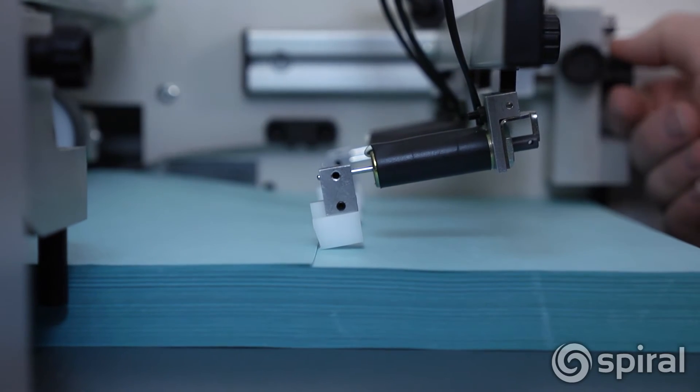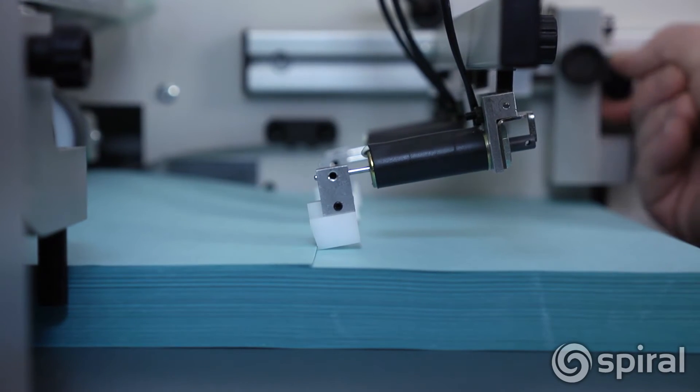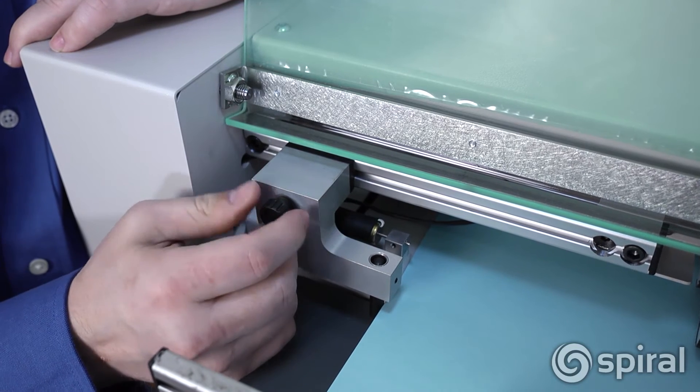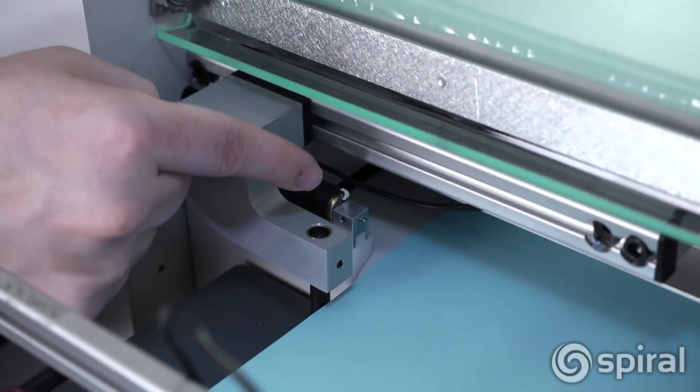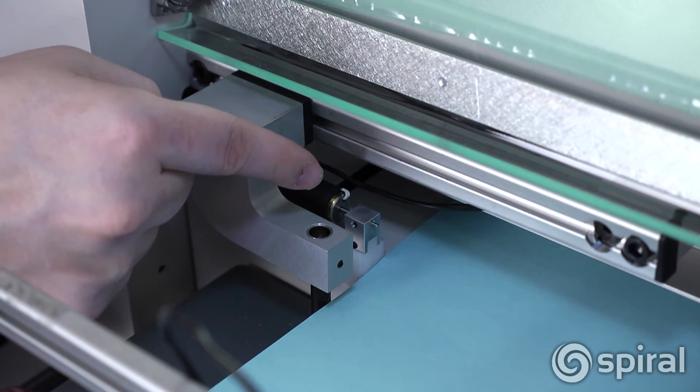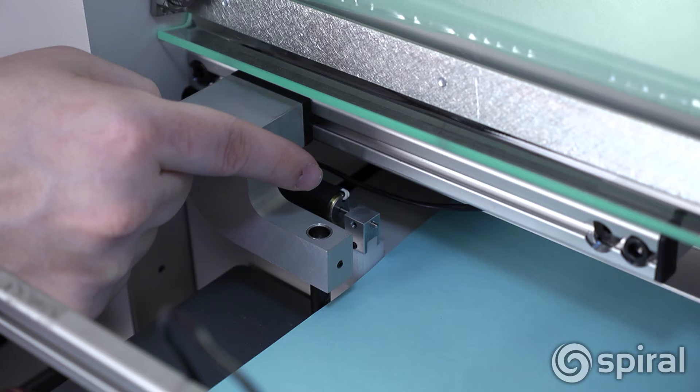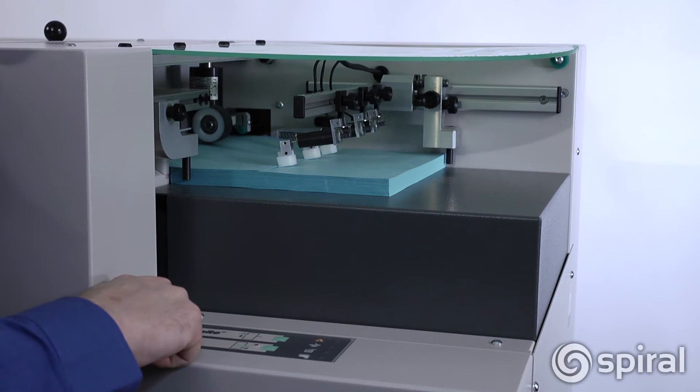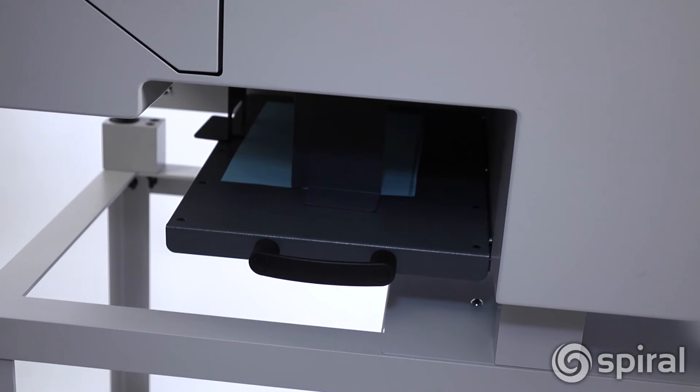To adjust the side jogger, turn the black knob on the solenoid support block and position the side jogger so it is touching the lift of paper. The paper shouldn't buckle. Push and hold the green run icon on the control panel until the lift of paper has been punched and moves into the reception bin, and release.